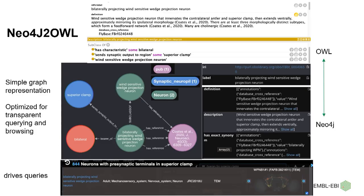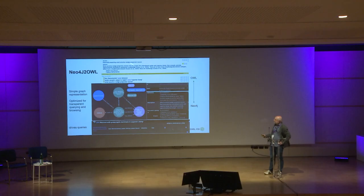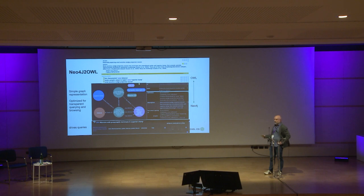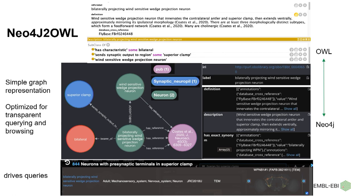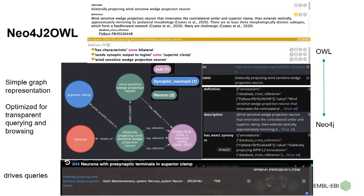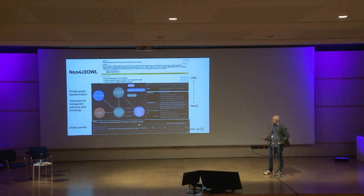Looking at the Neo4j-to-OWL conversion: here's a bit of OWL with a label, definition, publication, and some relationships. This gets turned into a nice readable graph with readable edges, rendered by semantic tag. Here's a publication shown, with all the annotation information in there. We can already use this structure — for example, there's a relation to the superior clamp, which is a part of the brain, and we can query over this graph to find over 800 neurons in the superior clamp.